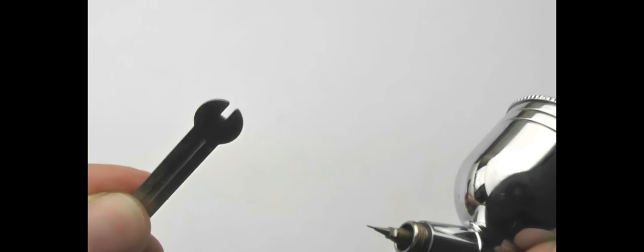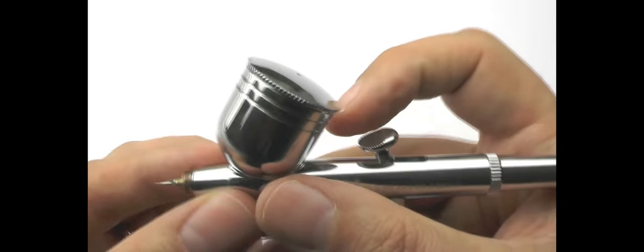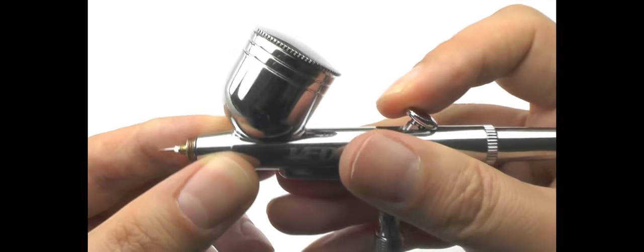And similarly with the nozzle as well, I'll just show you where that is. Now most airbrushes, they actually come with a little tool as well, just like that. What I generally do though is let's just pull that needle back and out of the way again.